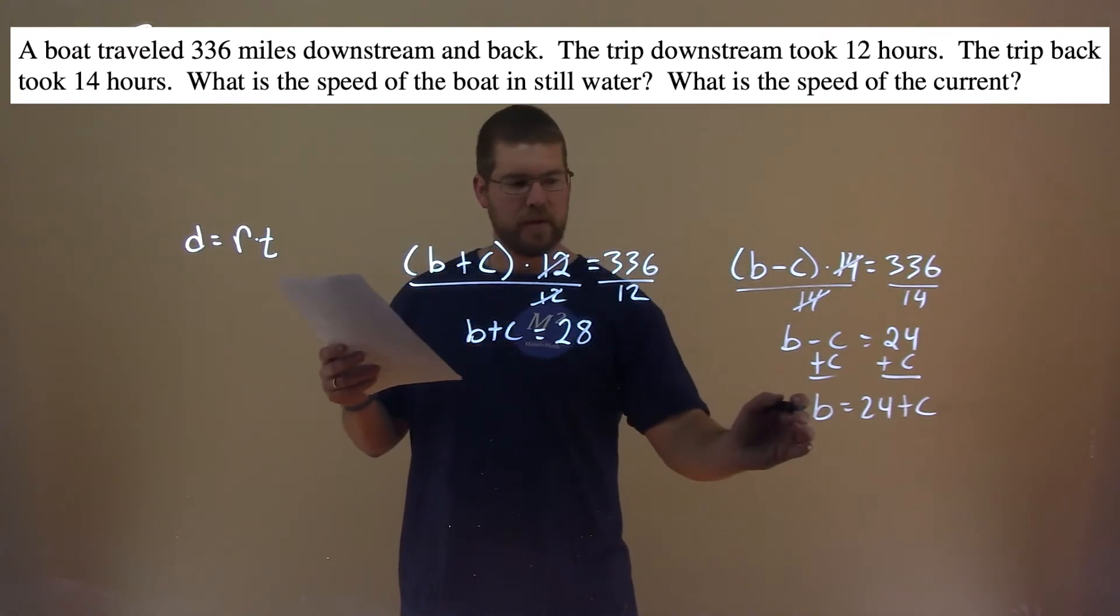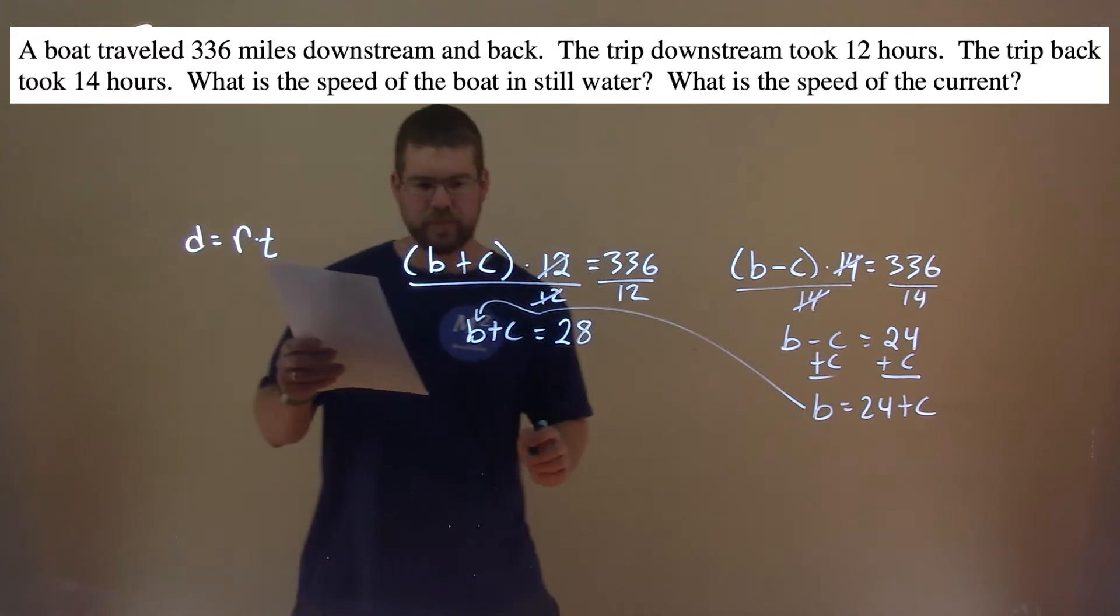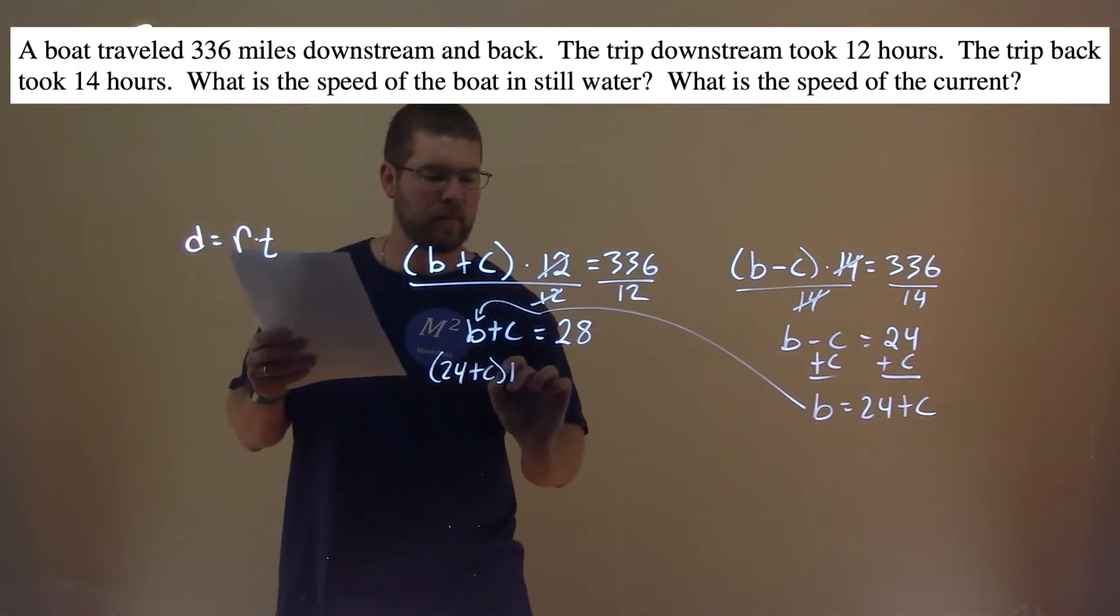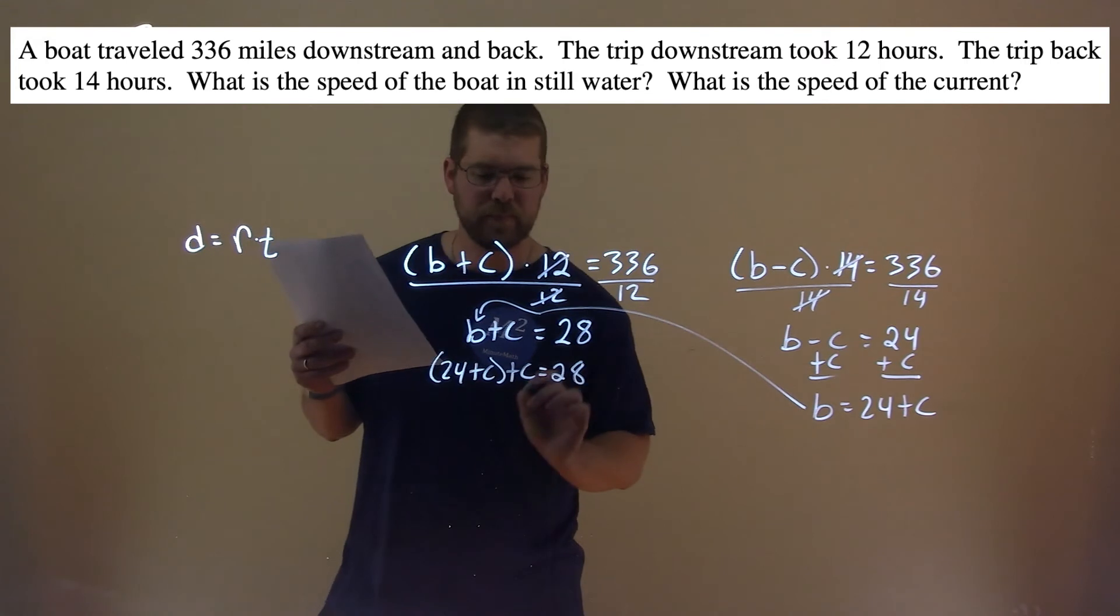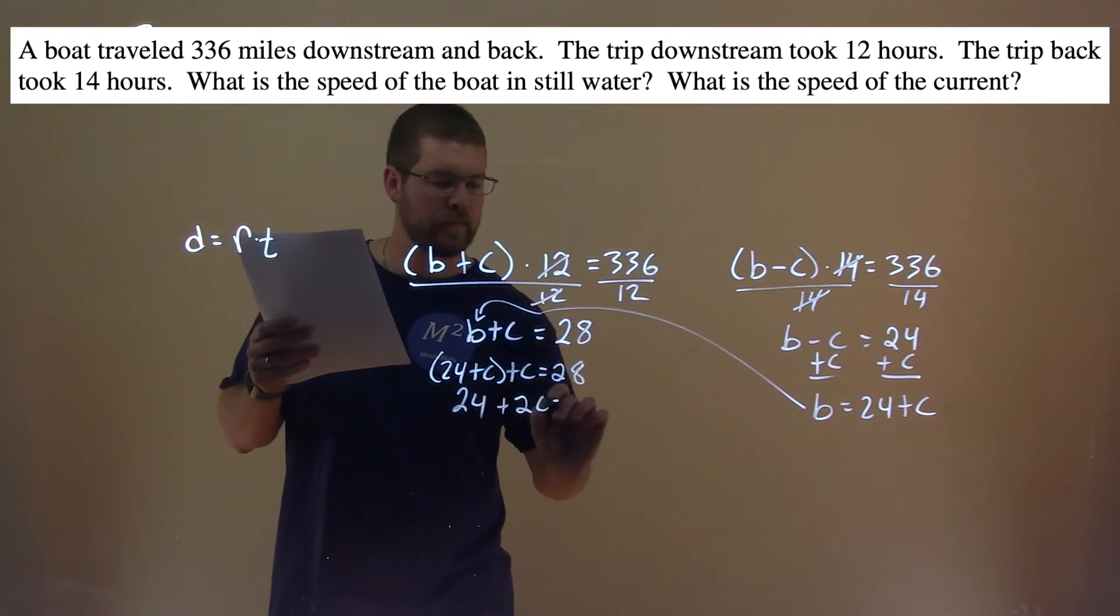We then take that information for B, and we're going to plug it in to the B value in our other equation. We have 24 plus C, plus C equals 28. Well, 24 here, C plus C is 2C, equals 28.